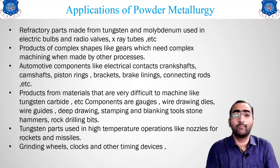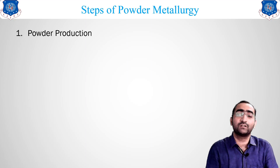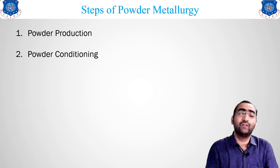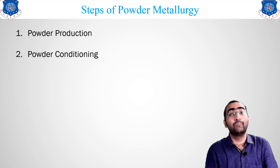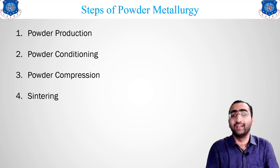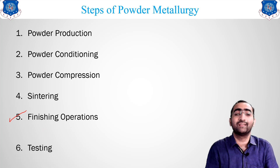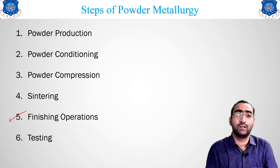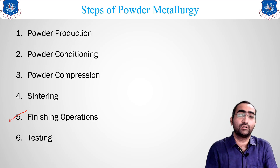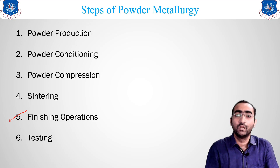Now let us define the steps of powder metallurgy. The first step is powder production. The second is powder conditioning — that is, mixing and blending. The third is powder compression. The fourth is sintering, which is the heating of the material. The fifth is finishing operations, which is optional. The sixth and last is testing of the material. The first four steps are the most important; without them, you cannot manufacture any powder metallurgical product.